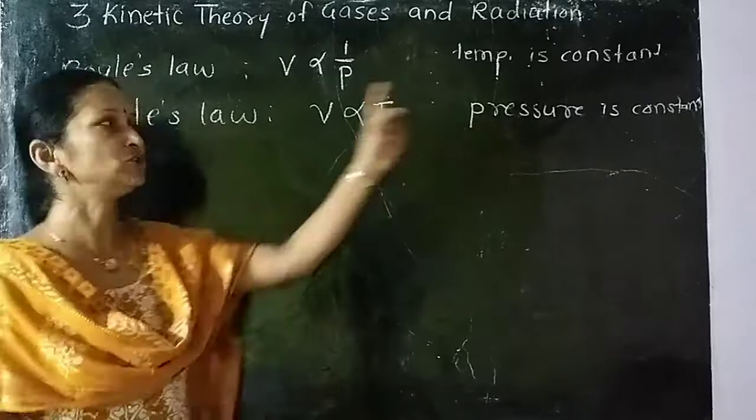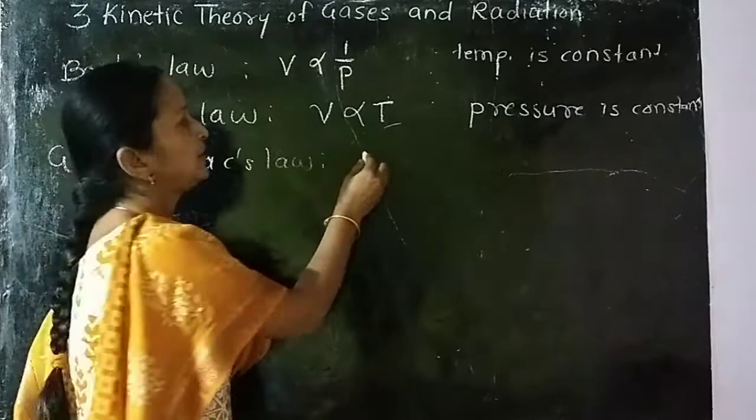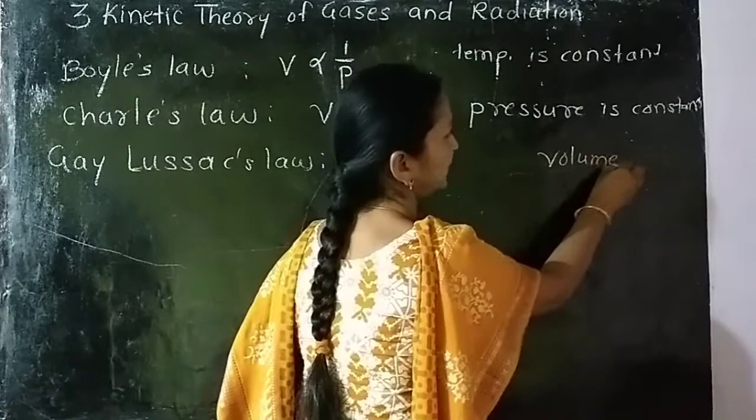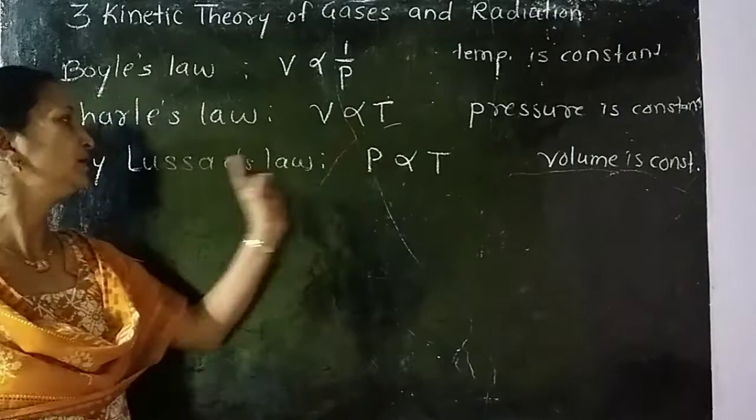Next is Gay-Lussac's Law. Gay-Lussac's Law states that pressure of gas is directly proportional to temperature. Here, volume is constant. So Boyle's Law is V proportional to 1 upon P, Charles' Law is V proportional to T, and Gay-Lussac's Law is P proportional to T.